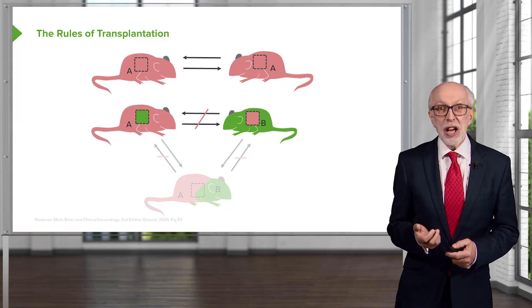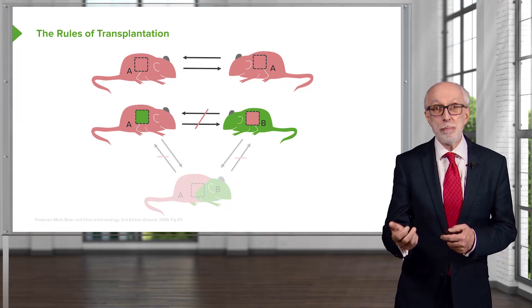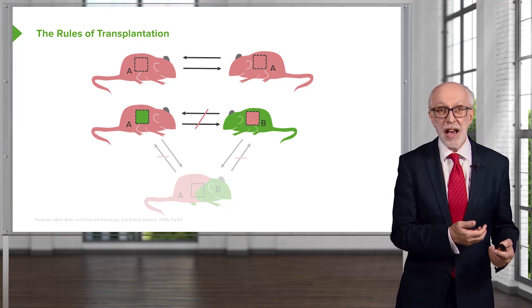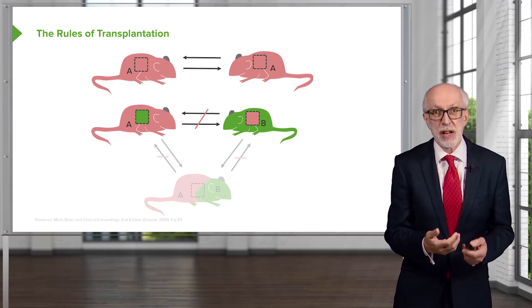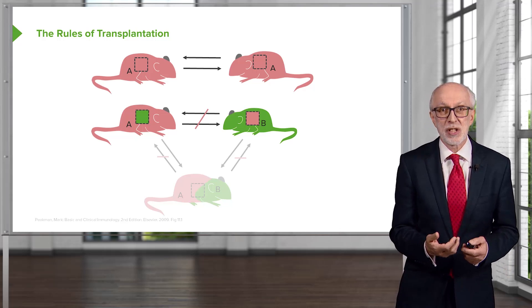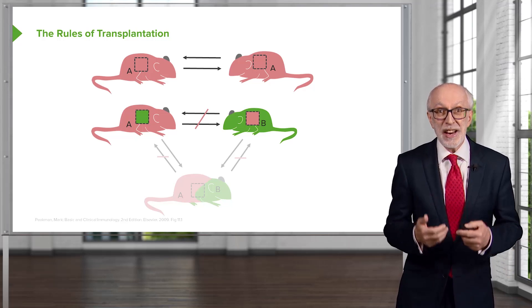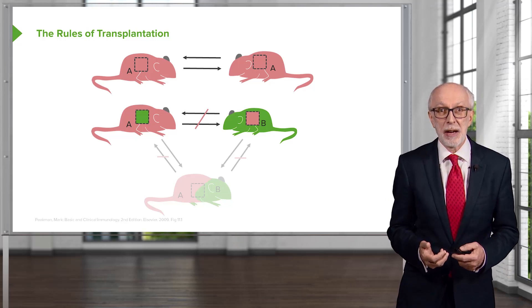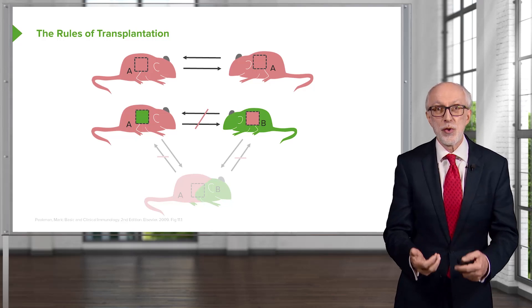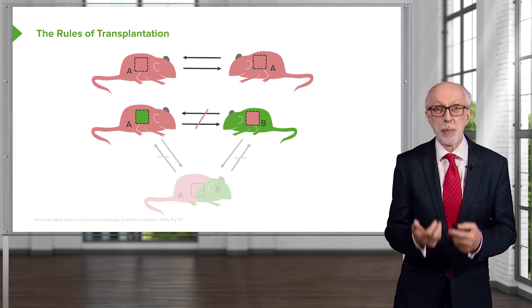However, if you take skin from a B strain mouse and transfer it onto an A strain mouse, or from an A strain mouse and transfer it onto a B strain mouse, then there will be foreign antigens on the graft that will be recognized by the recipient mouse. There will be an immunological reaction and the skin graft will be rejected.